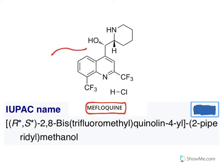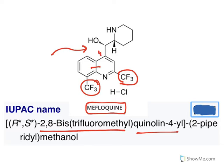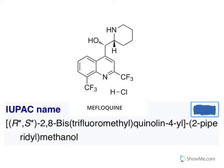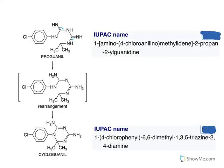Mefloquine is a quinine methanol derivative. Its IUPAC name is 2,8-bis(trifluoromethyl) — at the second and eighth positions trifluoromethyl groups are present — quinoline-4-yl, and the substitution at the fourth position is piperidinylmethanol, with a piperidine ring and a methanol group. The name 'meflo' hints at methyl fluoro — trifluoromethyl — and in a previous GPAT exam, a question asked which anti-malarial contains a trifluoromethyl group.